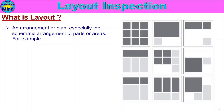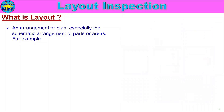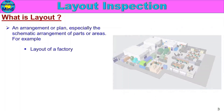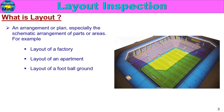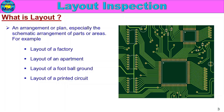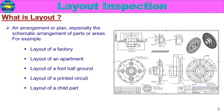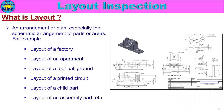First, Parties Layout. Layout is the arrangement or plan — especially the schematic arrangement of parts or areas. One plan, part, or image — drawing — all properly arranged or schematically arranged. Examples: layout of a factory, layout of an apartment, layout of a football ground, layout of a printed circuit PCB, layout of a child part, layout of an assembly part, etc.